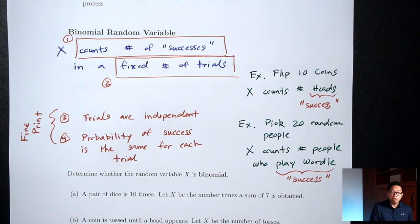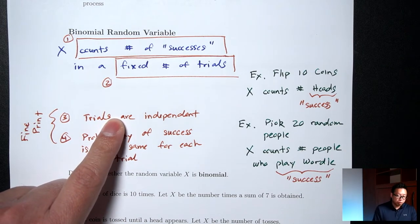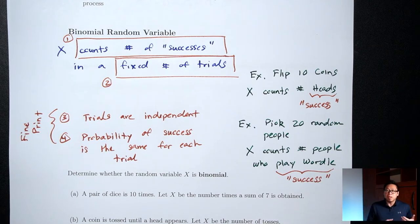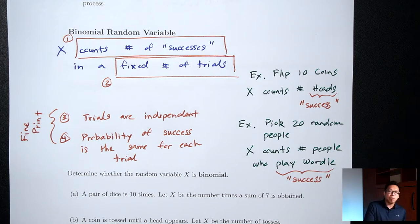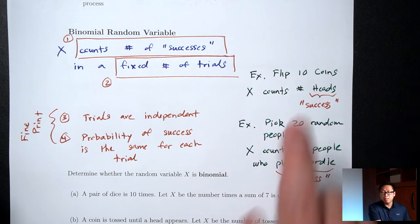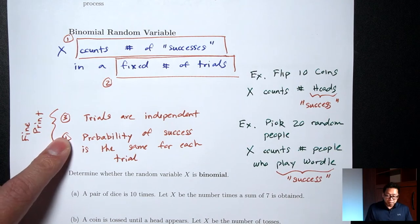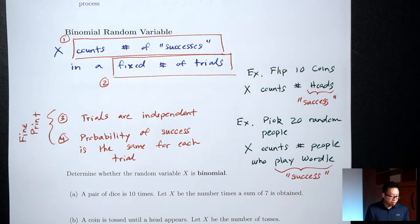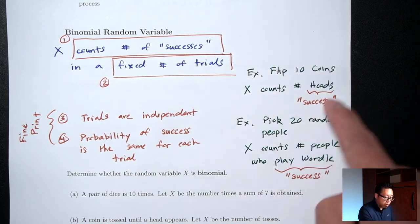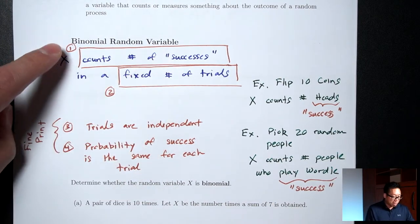For the coin example, are the trials independent? Yes. Independent refers to whether one trial affects what happens on the next trial. When I flip my first coin, it lands on heads or tails — whether it lands on heads or tails is not going to affect what happens on the second coin. The second coin doesn't care what happened on the first coin. So the trials are independent for the coin example. And each coin has a 50% chance of landing on heads, so the probability of success is the same for each trial. The flipping coin example satisfies all four requirements.